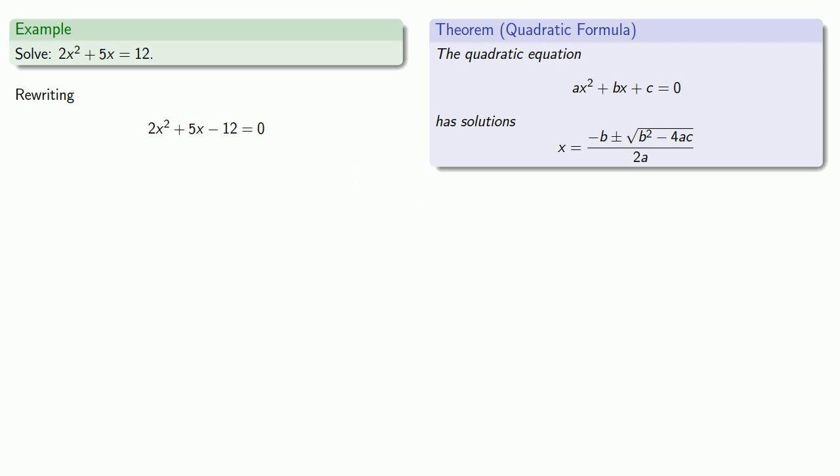Now we'll apply the quadratic formula. The equation ax squared plus bx plus c equals 0 has solutions x equals negative b plus or minus square root b squared minus 4ac over 2a.